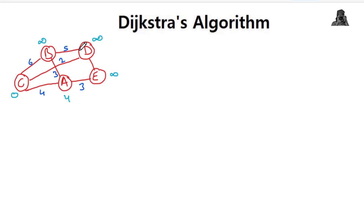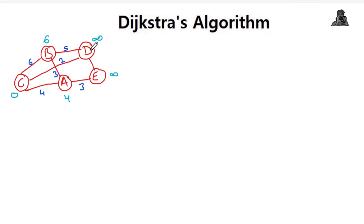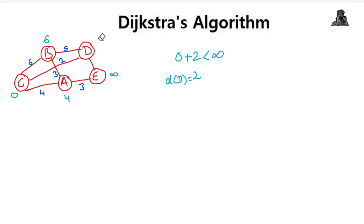Similarly, we find the distance for B: distance of C (0) plus cost of reaching B from C is 6, which is less than infinity, so B's distance is updated to 6. For D: distance of C (0) plus cost of reaching D from C is 2, which is less than infinity, so D's distance is updated to 2. Now all adjacent vertices have been visited from C.